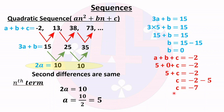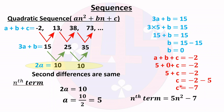Now we substitute a, b, and c into the general format an² + bn + c. Since b = 0, that term disappears. With a = 5 and c = −7, the nth term is 5n² − 7. That is the nth term of this given sequence.